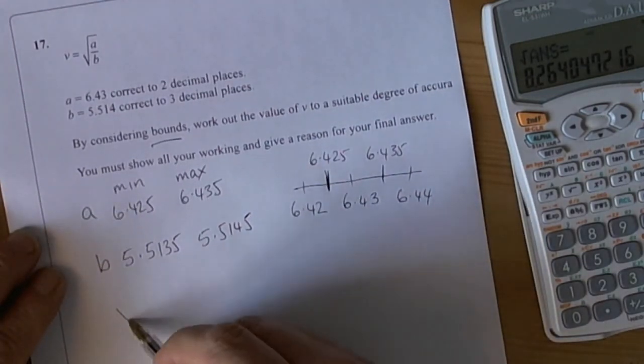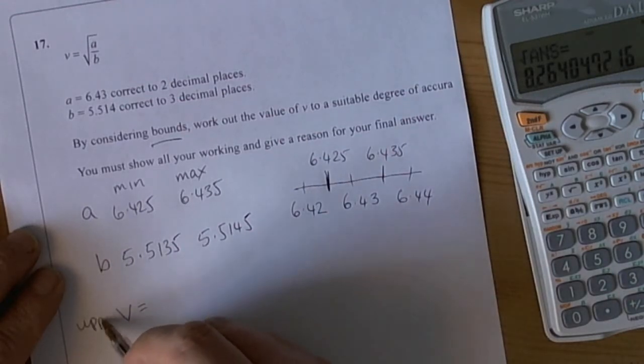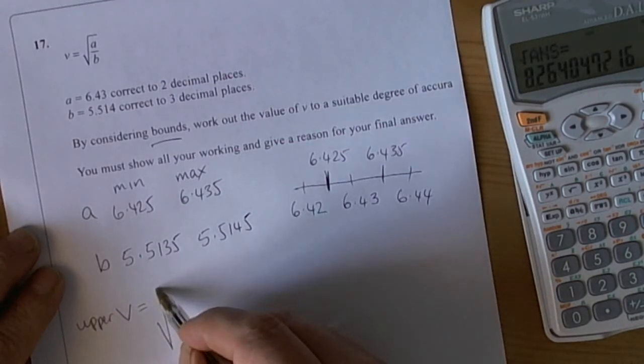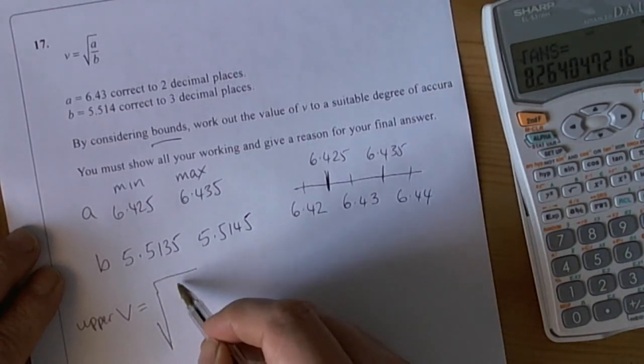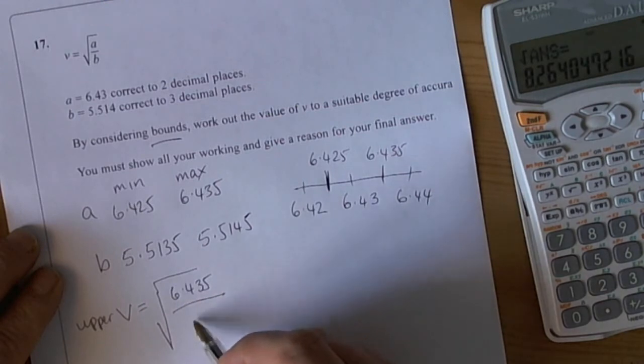Now this question is asking you to deal with finding the V value that would be sensible. Well that really means you've got to find the upper V value which will be given by V equals the square root. Now here you've got to be careful. If you want to make the largest possible value for a square root we need the largest possible inside it. So we're going to divide the largest A value by the smallest B value.